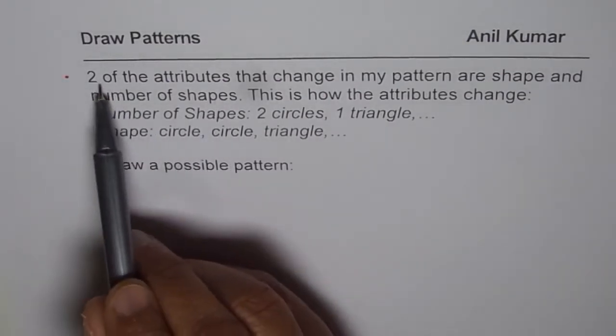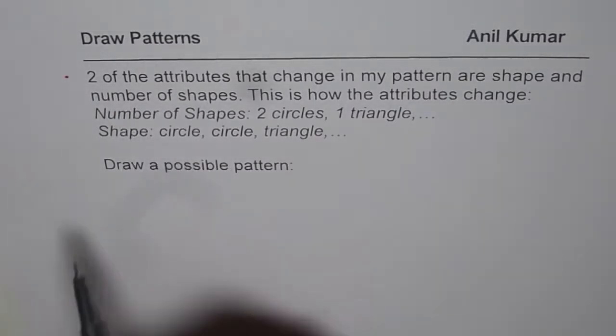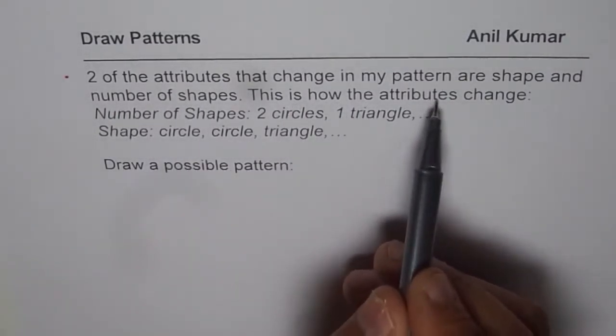So in my pattern there are two attributes that are changing. One is shape and the other one is number of shapes. This is how the attributes change.